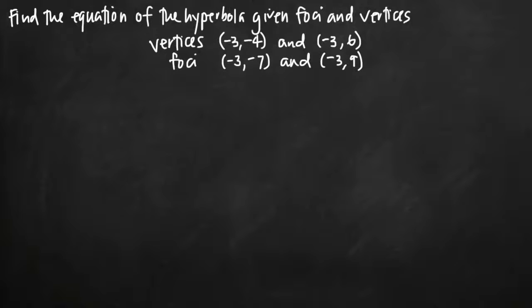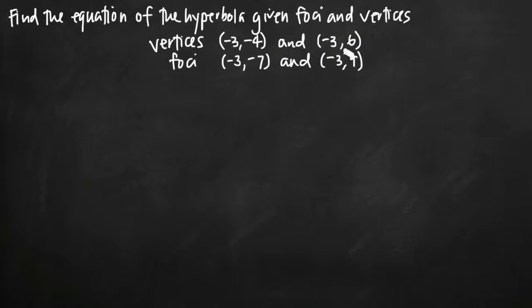Today we're going to be talking about how to find the equation of a hyperbola given only its foci and vertices. In this particular problem, we've been told that this hyperbola has the vertices negative 3, negative 4 and negative 3, 6, and that it has the foci negative 3, negative 7 and negative 3, 9.